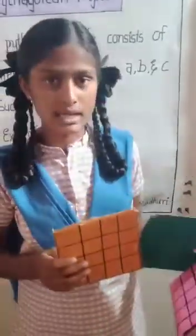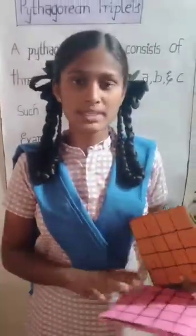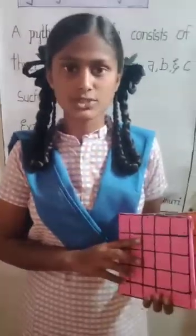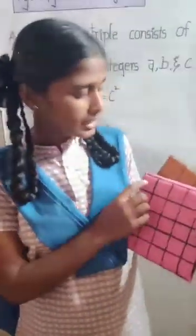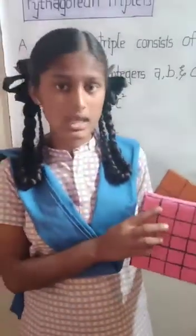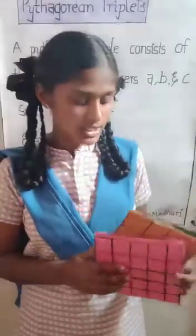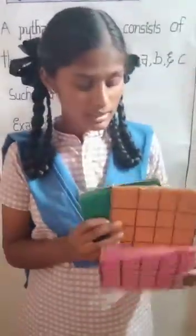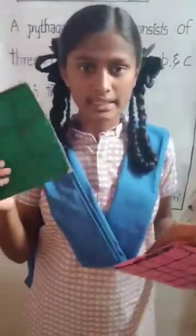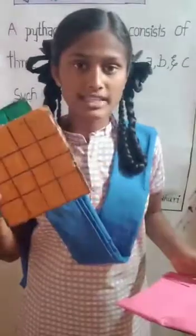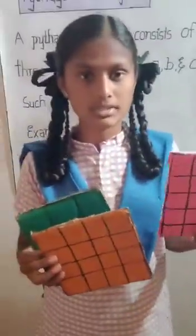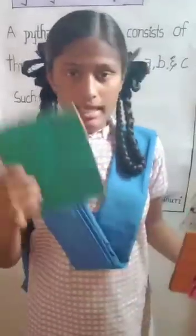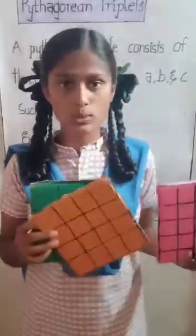Let us make this sum. 9 plus 16 is equal to 25. We must and should see that C squared should be 25. Here are five rows, and each row contains five boxes. 5 into 5 is equal to 25. Here we can conclude that green is equal to A, orange is equal to B, and pink is equal to C. A squared plus B squared is equal to C squared.